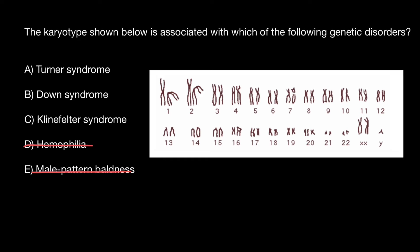Turner syndrome is caused by a missing X chromosome, so phenotypically this is going to be a female that has one X chromosome instead of two. However, missing one X chromosome is not as deleterious as missing any other chromosome in our genome. We can say this is not Turner syndrome because we see two X chromosomes here, so we can cross out this variant.